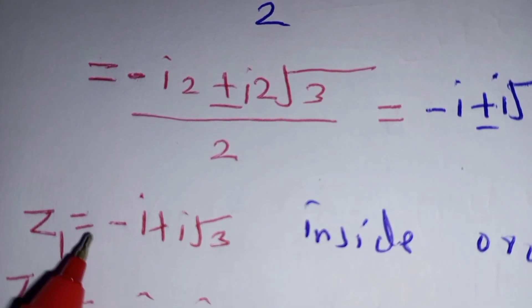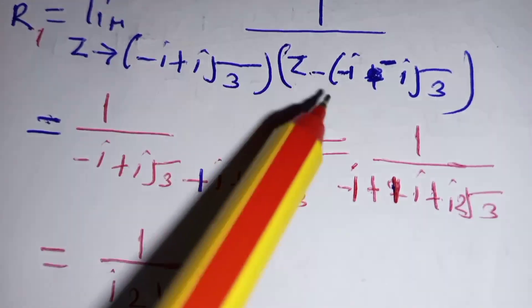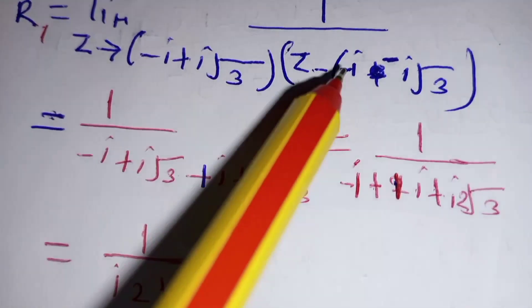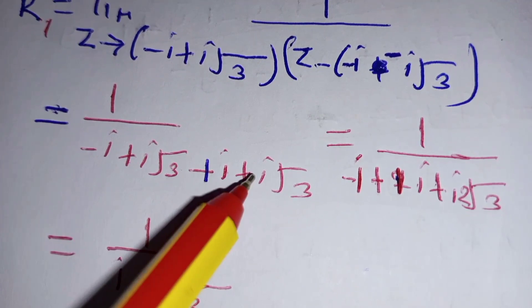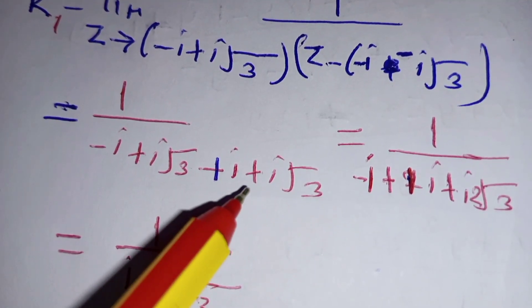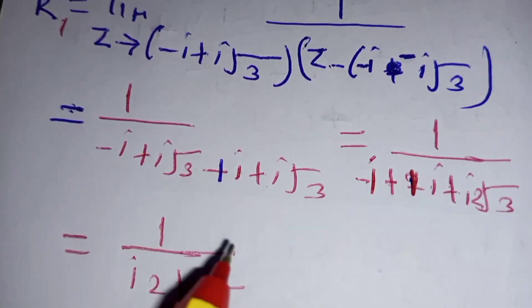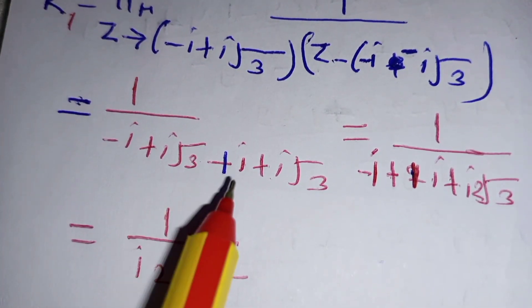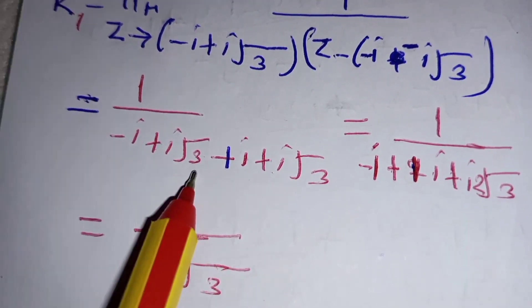Now we have two possibilities. The poles are z equals negative i plus i root 3, which is inside the given circle of radius 1. The other possibility is z equals negative i minus i root 3, which is outside the given circle.